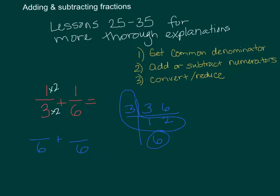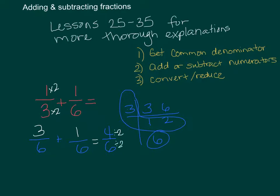If I multiplied the bottom by two, I must do the same to the numerator — beat up the best friend. For the six, I didn't have to do anything to make it become six, so just multiply by one — same to the top. Now that my denominators are the same, add the numerators — not the denominators. Now they're cut into the same amount of pieces, so just add your numerators: three plus one is four, giving four-sixths. It's a proper fraction so no conversion needed, but it can be reduced — two divides into both. Four divided by two is two, six divided by two is three. The answer is two-thirds.